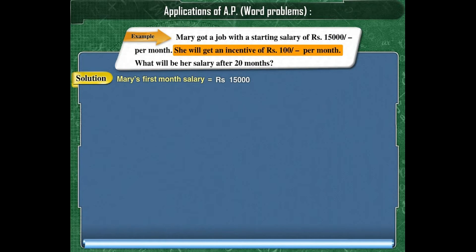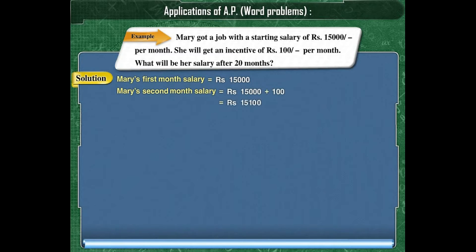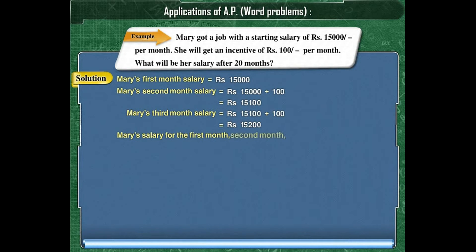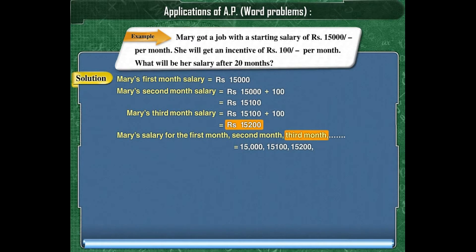The salary for the second month will be rupees 15,100. The salary for the third month will be rupees 15,200. Therefore, the salary for the first, second, third month and so on will be rupees 15,000, 15,100, 15,200 and so on. This is an AP with the first term 15,000 and the common difference 100.